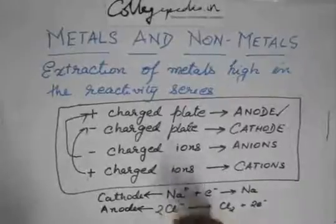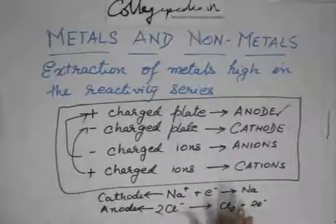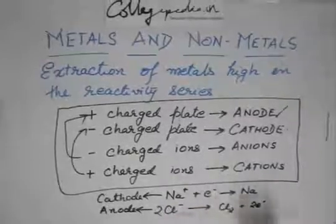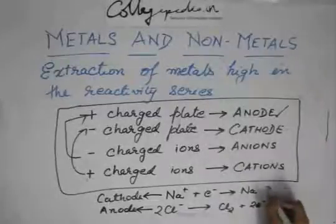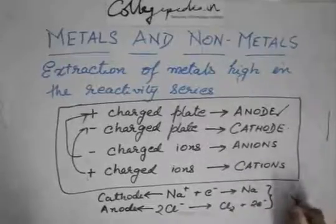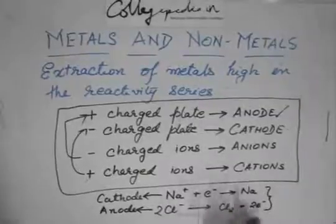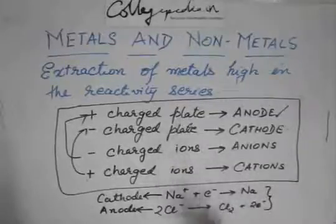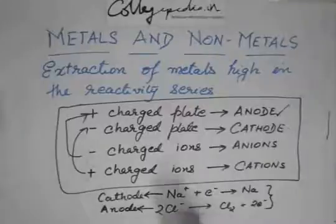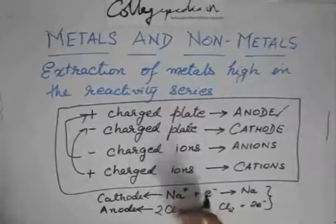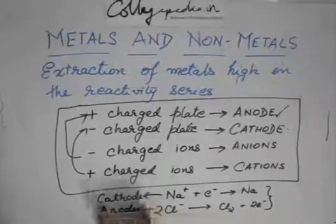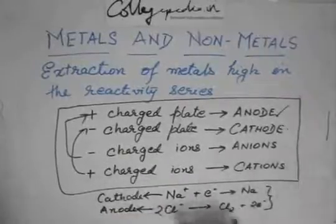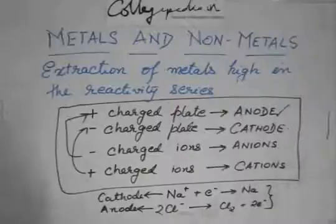They will ask you these equations and where they take place. It is very frequently asked: write the equation for electrolysis of molten sodium chloride and state where the two reactions take place. So you write the first equation and write 'at cathode,' then write the second equation and write 'at anode.'